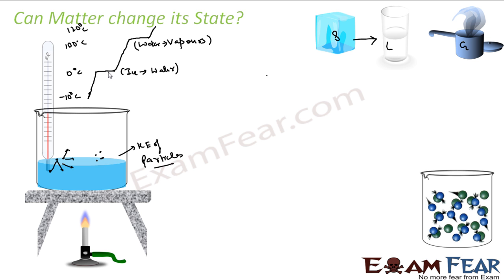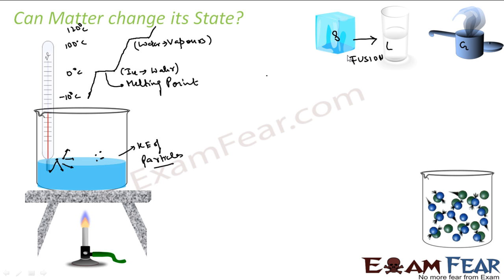A stage will be reached where all these solids melt and convert to liquid. This stage is called the melting point. If you see the curve, the temperature was constant for some time where all the ice actually melted to water, and this temperature is called the melting point — for water it is 0 degrees Celsius, or 273.16 Kelvin. The process of melting from solid state to liquid state is called fusion. Solid to liquid change of state is called fusion.